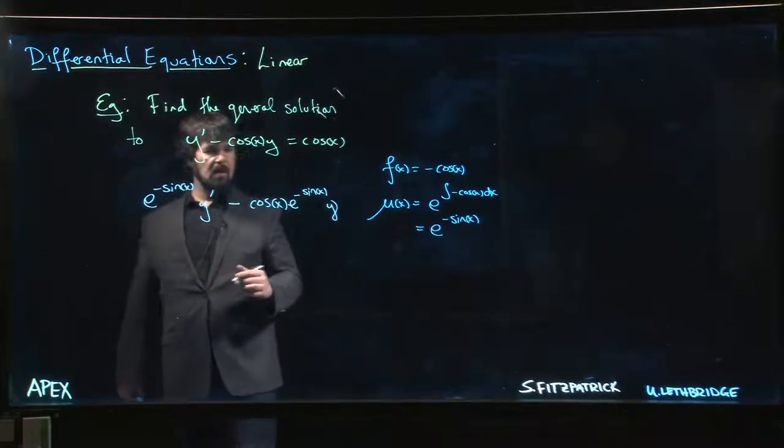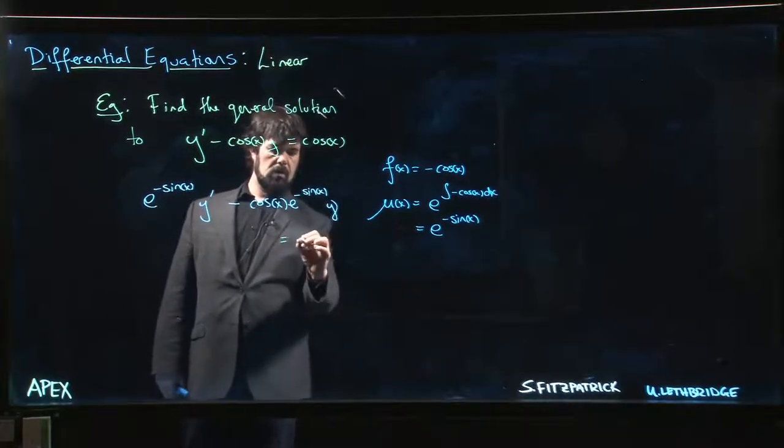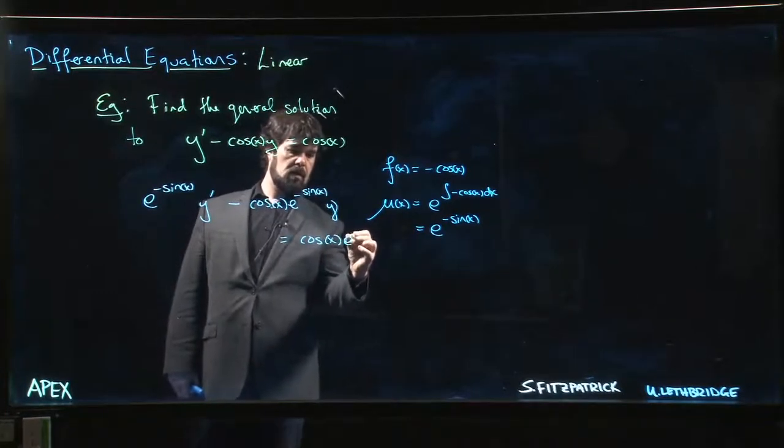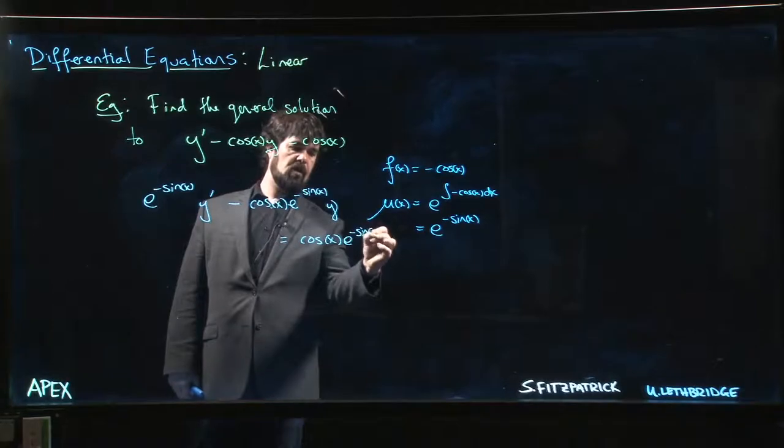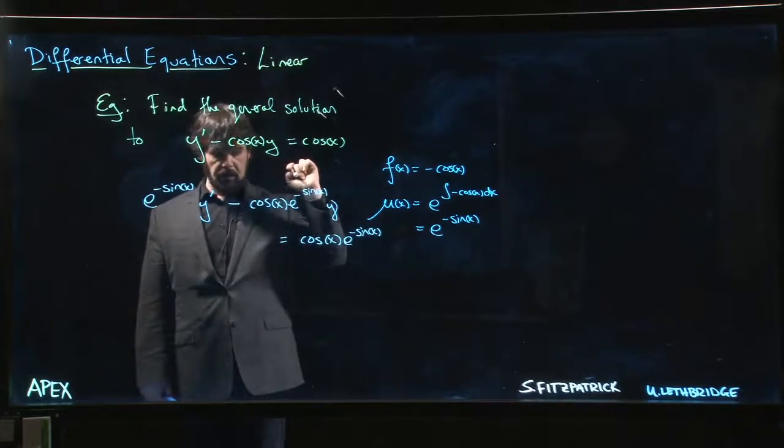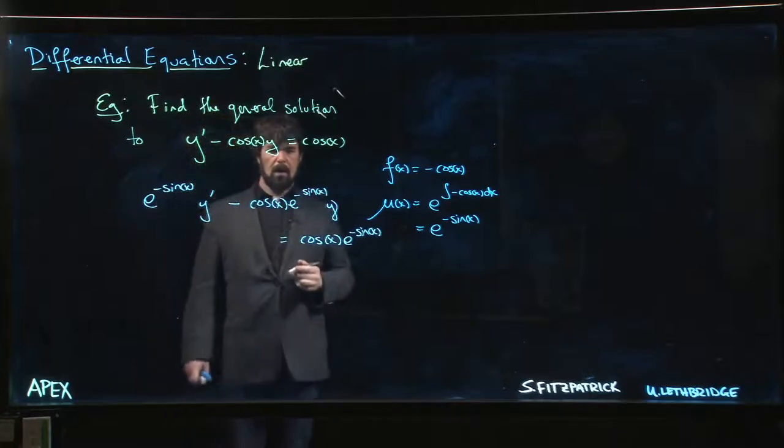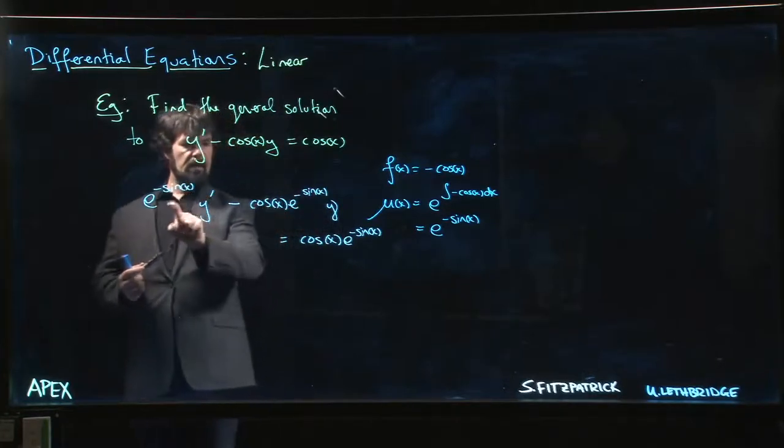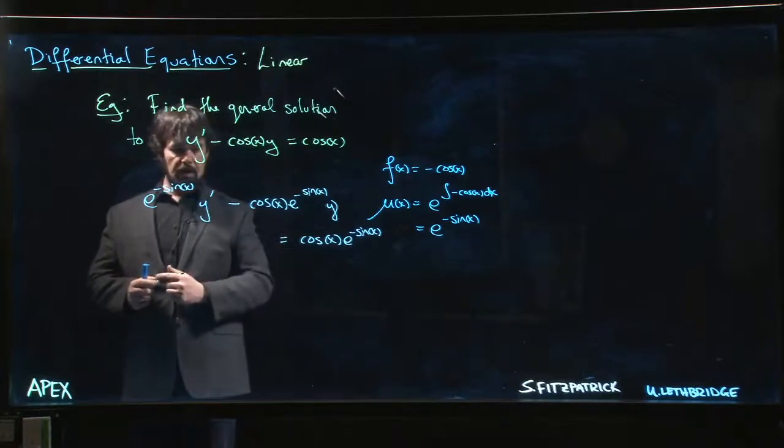Minus cosine x e to the minus sine x times y. There's the left-hand side and that's going to be equal to cos x e to the minus sine x. We have to also multiply by the integrating factor on the right-hand side. So there's our integrating factor here, here, here. We put it in all three places.